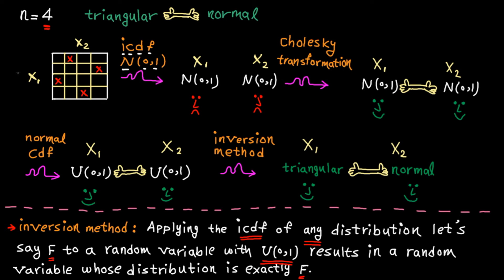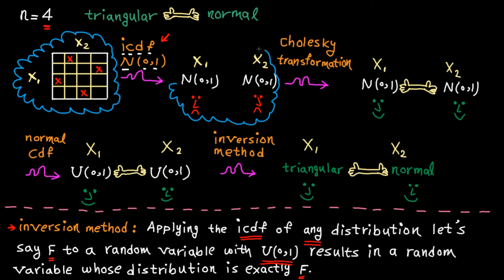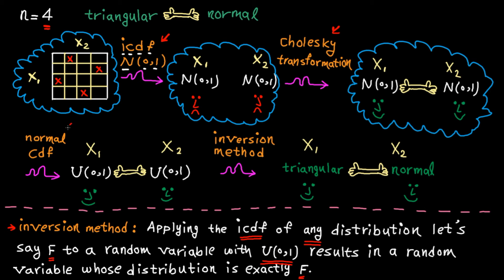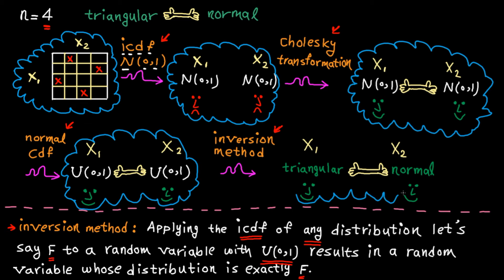Let me recap all the steps. First, generate Latin hypercube samples. Then map the samples to values using the inverse CDF of a normal variable with zero mean and standard deviation of one — this generates independent normal variables. Then by applying Cholesky transformation, we add dependency between variables. Next, by applying the normal cumulative distribution function to the normal variables, we transform them to uniform random variables. Finally, we use the inversion method to transform uniform variables to new random variables with the specified probability distribution function.